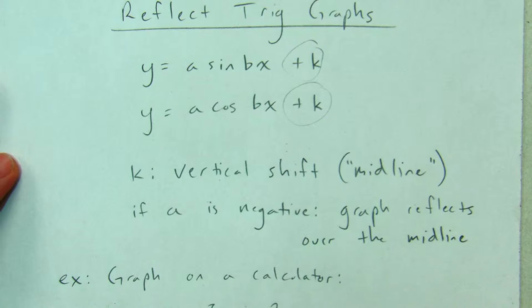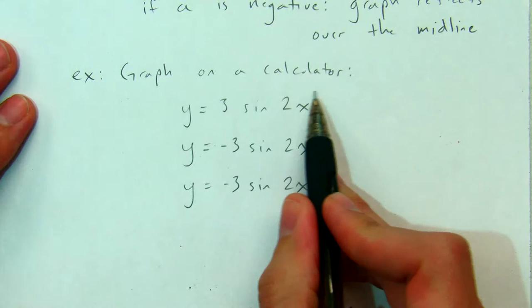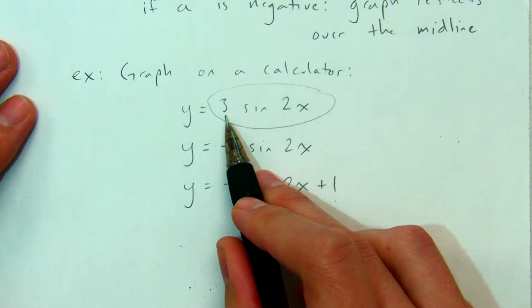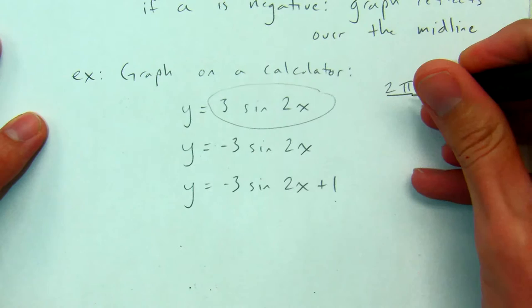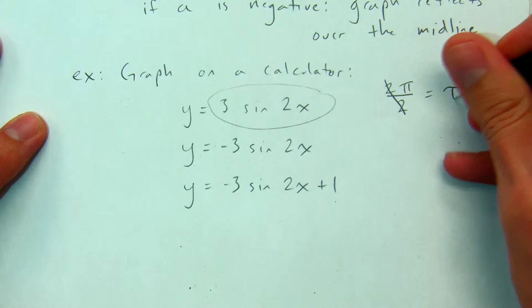So let's see if we can visualize some of this. And to do that, we're going to look at three graphs. We're going to start with one that we might have seen in section 10.1. 3 sine of 2x. We know the amplitude here is 3. We know that the period is going to be 2 pi over b. And in this case, b is 2. So the period is going to be pi.